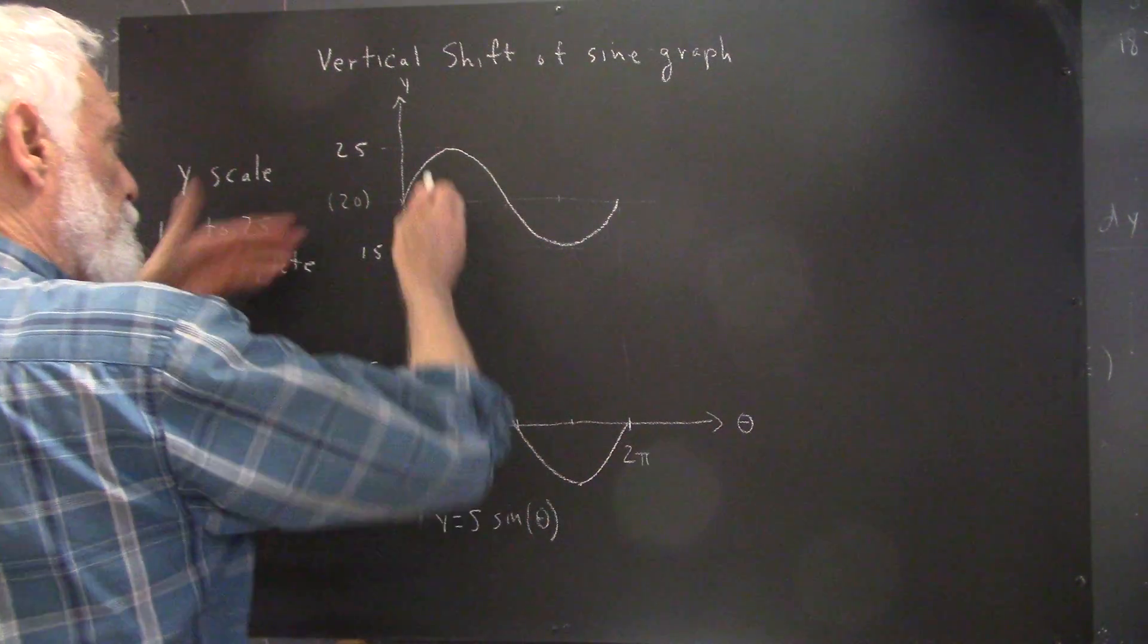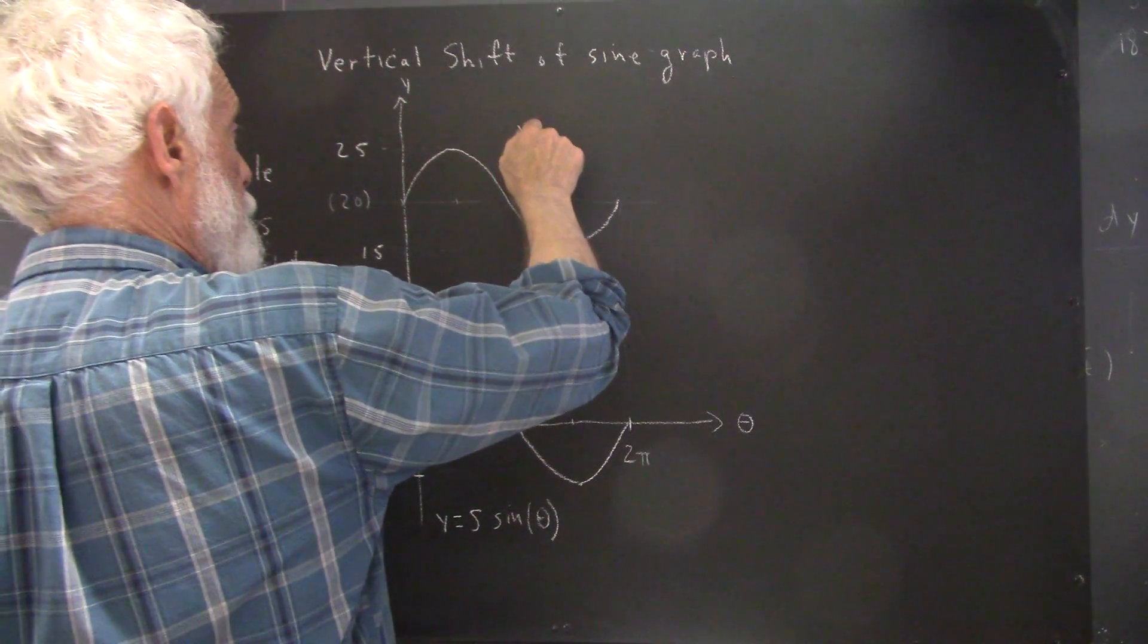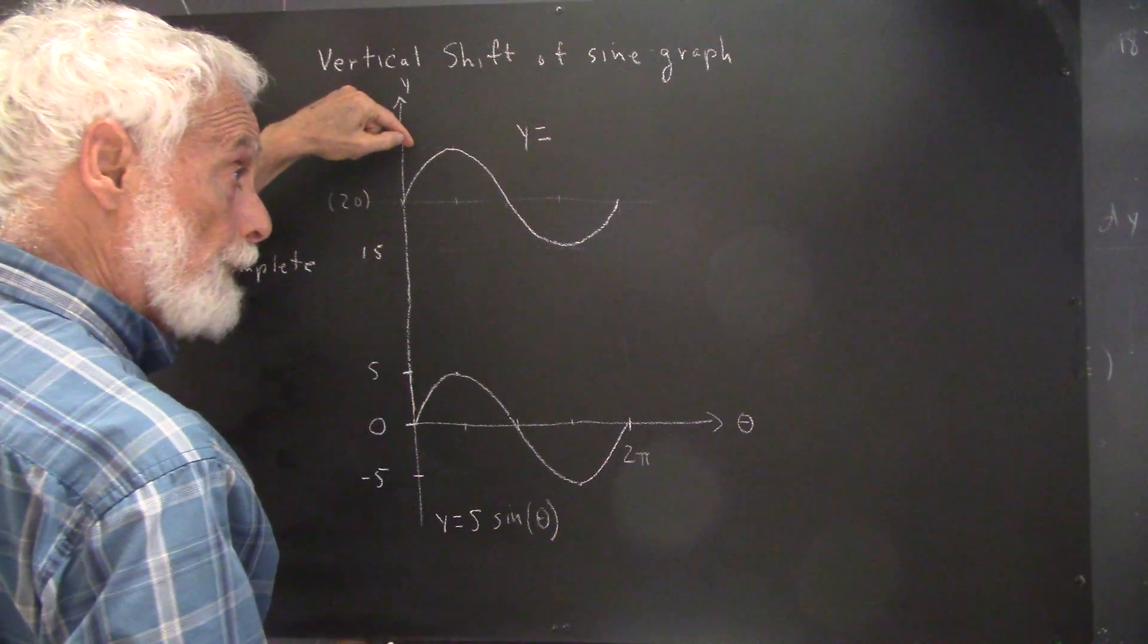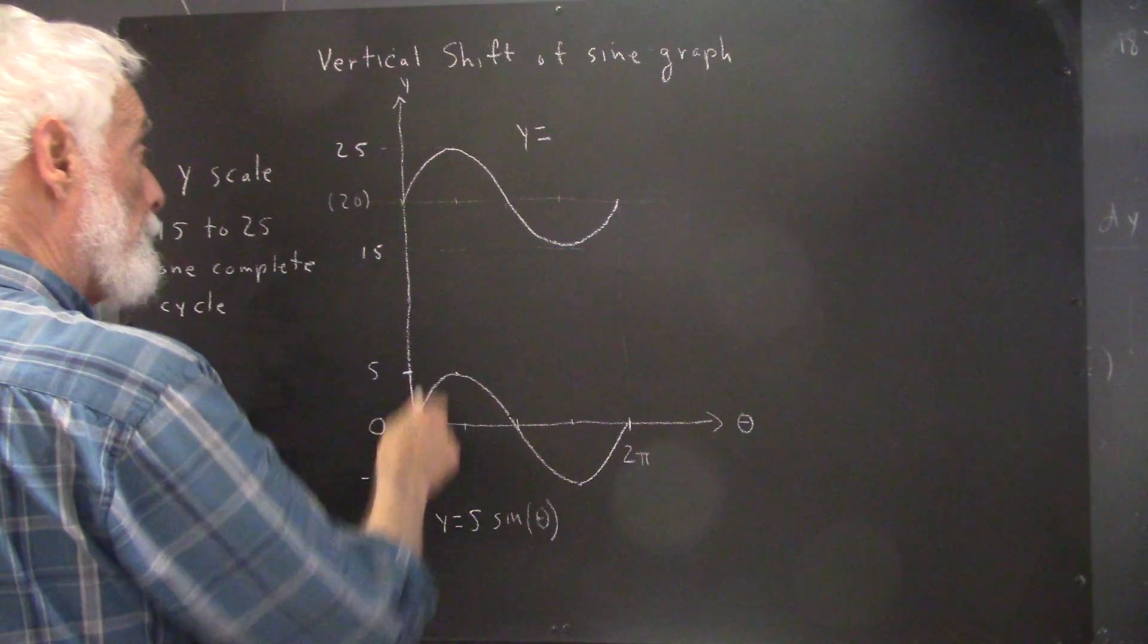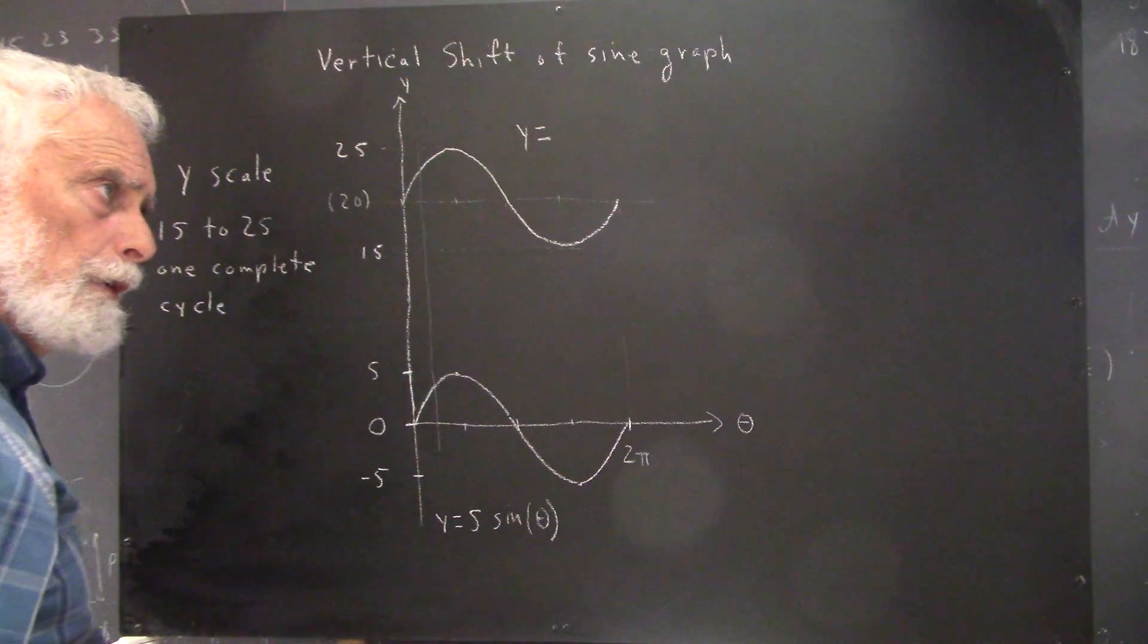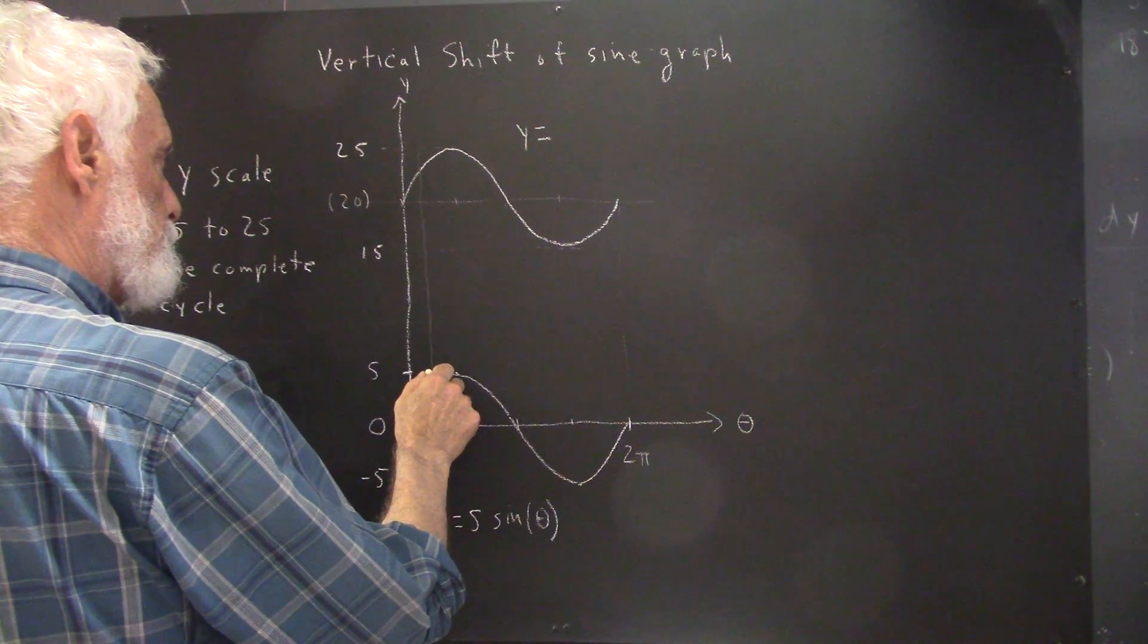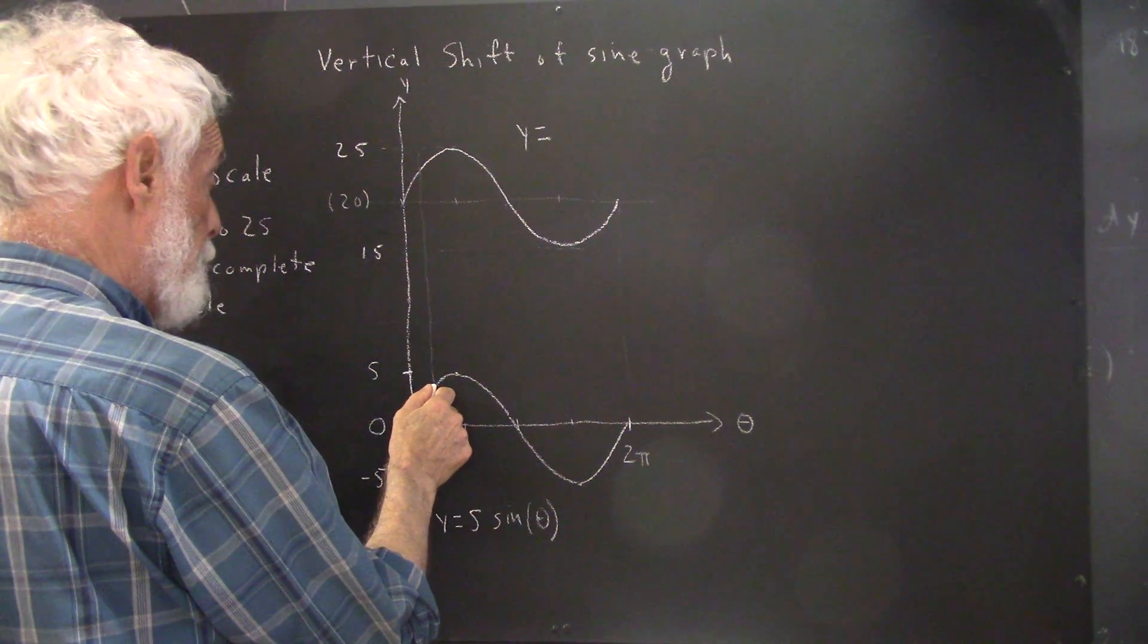Okay, so how are we going to get the function for this graph? y equals what for this graph? Well, every point of this graph has to lie 20 units above the corresponding point of this graph. So if I was to draw a vertical line representing our theta coordinate or our horizontal coordinate,